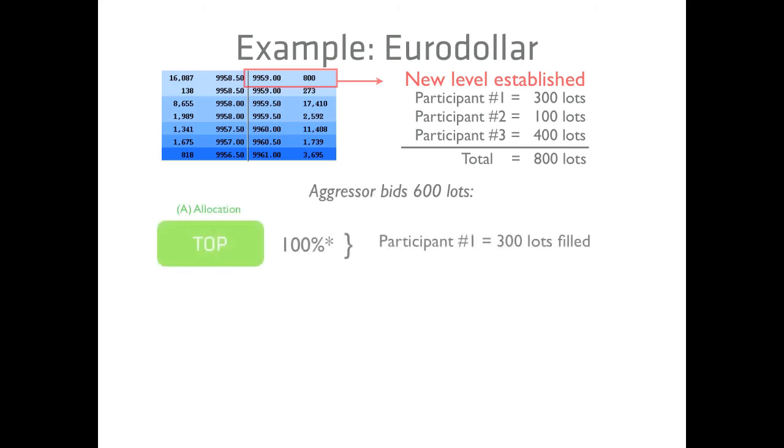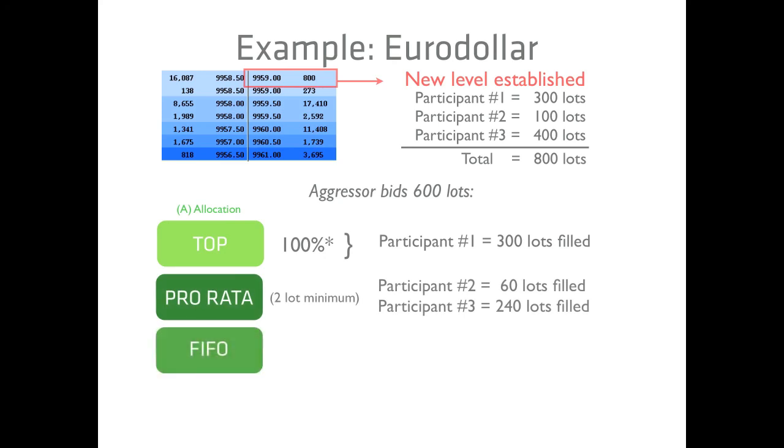The Eurodollar orders are matched using algorithm A, Allocation, which combines the TOP, Pro-Rata, and FIFO rules. Participant 1 is fully filled, while participants 2 and 3 receive the remaining quantity in proportion to their order size.